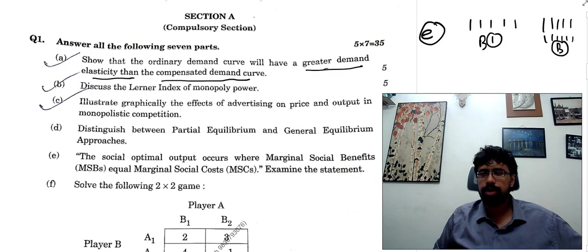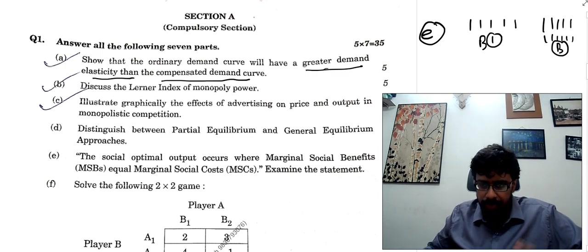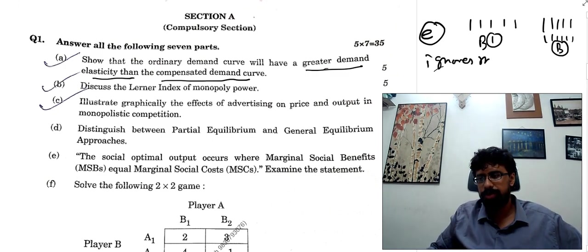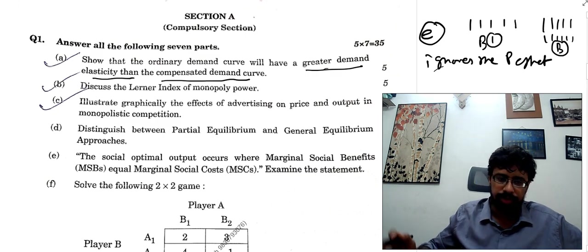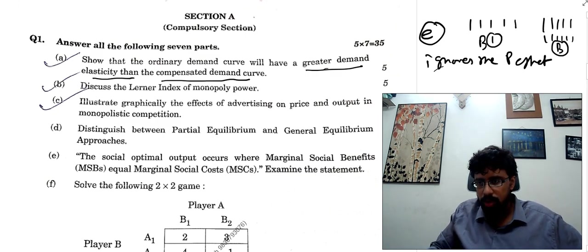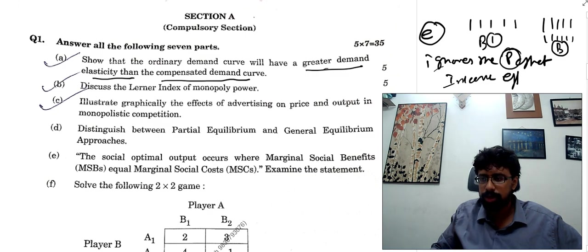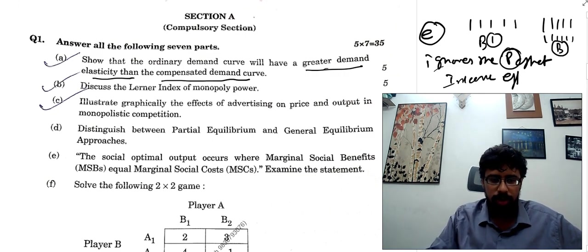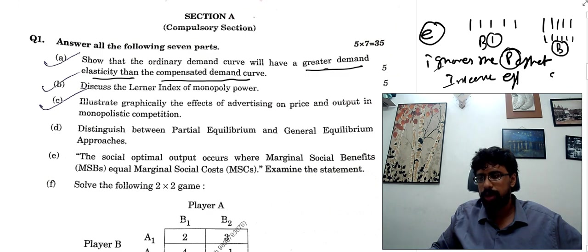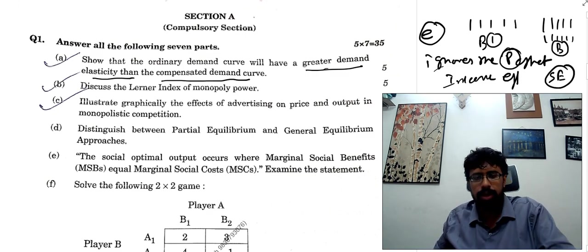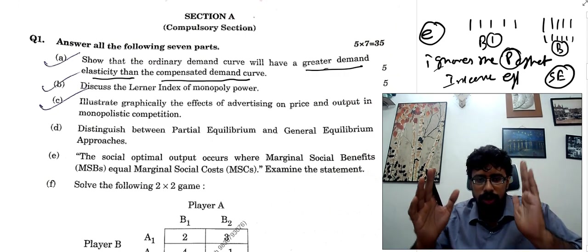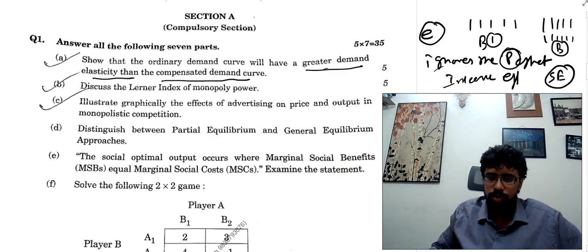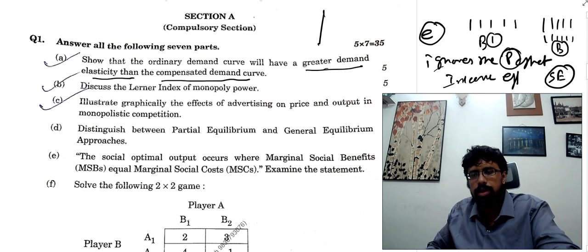Looking at it definition-wise, there is a compensated demand curve definition. Any curve which actually ignores the income effect changes — with price effects it will be a normal curve taking that effect into consideration. The compensated demand curve works only on the substitution effect. But in a normal demand curve, we have seen this pattern in a different way. So you need to explain all of this.